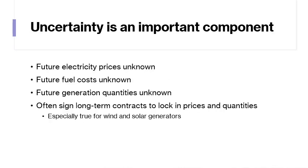There's a lot of uncertainty in this equation. Future electricity prices are unknown — if the lifetime of the plant is 50 years, we have to forecast electricity prices 50 years out. Future fuel costs are also unknown; we don't know what natural gas prices are going to be 50 years from now. Future generation quantities are unknown too. Some of this can be offset — companies often sign long-term forward contracts to lock in prices and quantities, especially true for wind and solar generators.